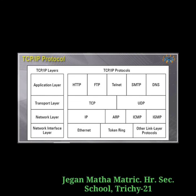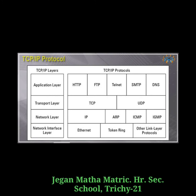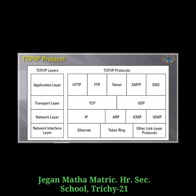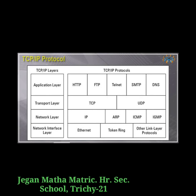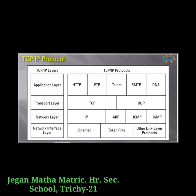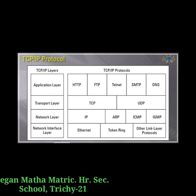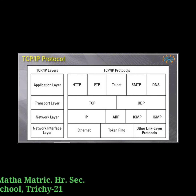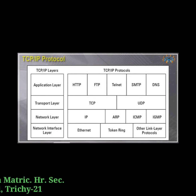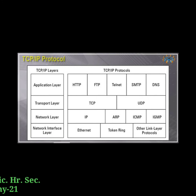MAC stands for Medium Access Control. The MAC address is the hardware identification number that uniquely identifies each device on a network, used to map IP network addresses to hardware addresses. ICMP — Internet Control Message Protocol — is used by network devices to send error messages and operational information, such as when a host or router cannot be reached. IGMP — Internet Group Management Protocol — is used by hosts and routers to send multicast group communication messages to multiple IP addresses at once.